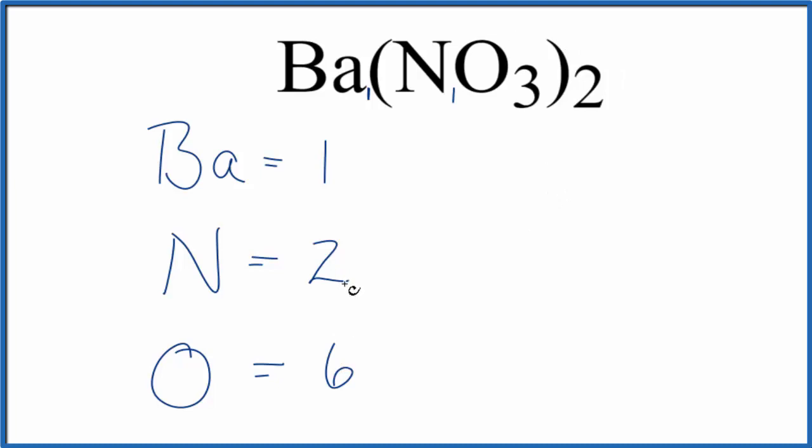Sometimes you're asked to figure out the number of, say, nitrogen atoms in one mole of barium nitrate. In that case you would just multiply the nitrogen here by Avogadro's number.